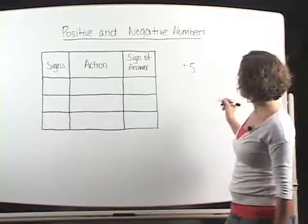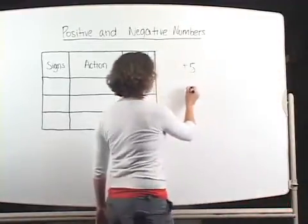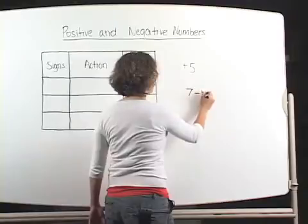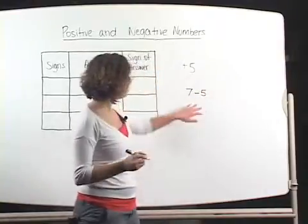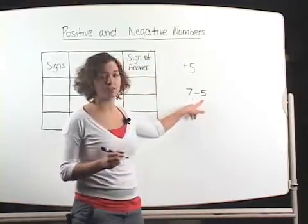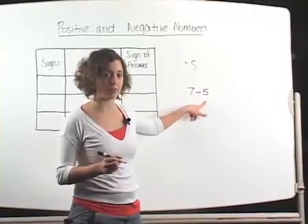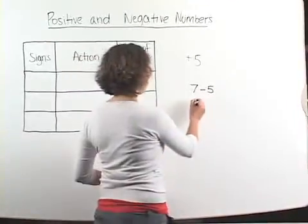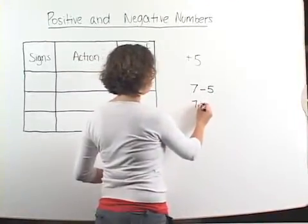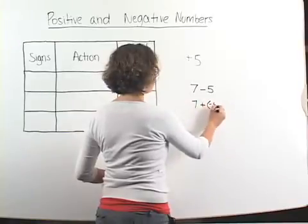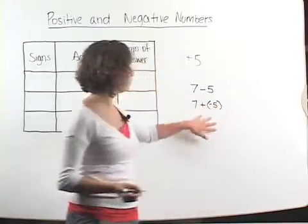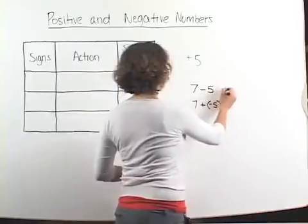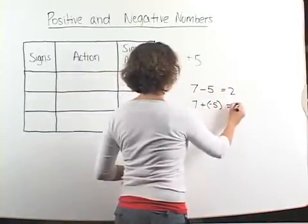However, if you look at seven minus five, now you could think of the five, the five is actually a negative number, so you could also write it as seven plus a negative five. And it's going to give you the same thing, you're going to get two.